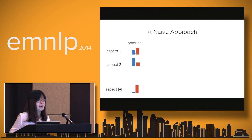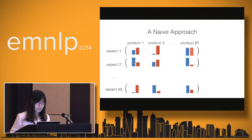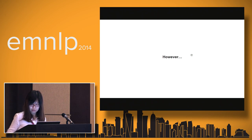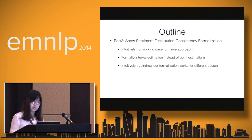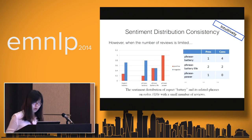Assuming we have already got all sentiment distributions for all aspects for some product, and also for product 2 and all products, for each aspect we get a sentiment distribution vector per product. Here comes a phrase — we have to decide which aspect to assign it to, so maybe we select the nearest one. However, this is problematic. I will show you why, and also show our formalization. First I will take an example to show why the naive approach is not working, and then I will show our formalization, and take another example to show how our formalization works well.